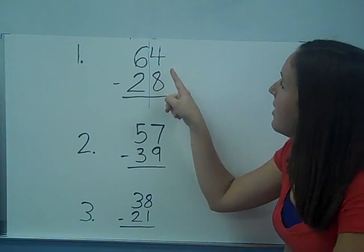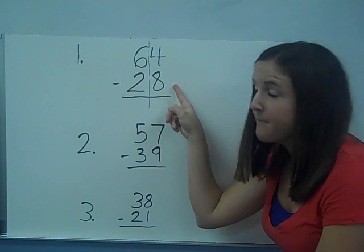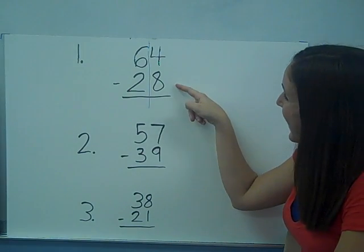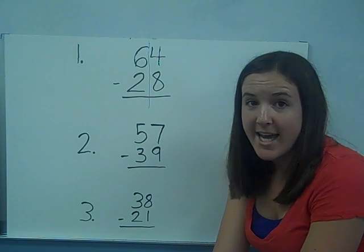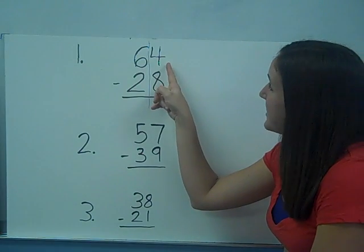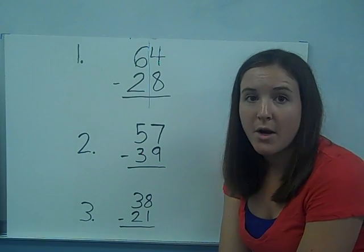In the ones, we have the four on the top and eight on the bottom or on the floor. Four, eight, more on the floor, go next door and get ten more. So this four is going to have to go over into the tens and ask to borrow a ten.